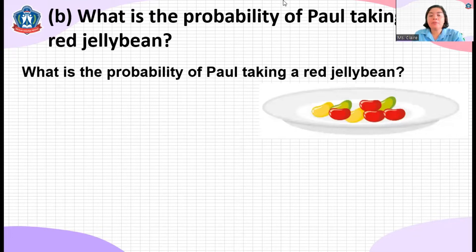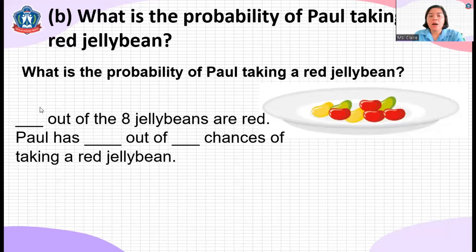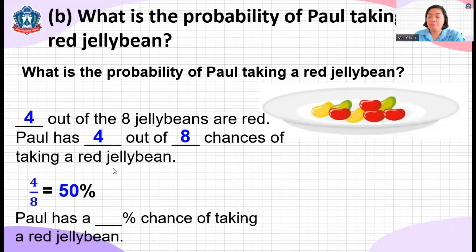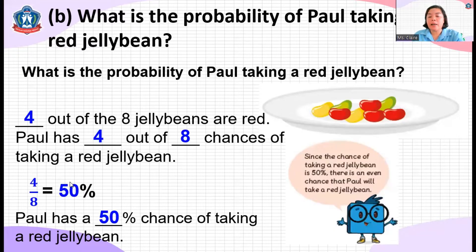What is the probability of Paul taking a red jelly bean? There are four red jelly beans. Four out of eight jelly beans are red, so Paul has four out of eight chances of taking a red jelly bean. Four out of eight equals one half, or 50%. Since the chance is 50%, we have what we call an even chance of getting a red jelly bean.